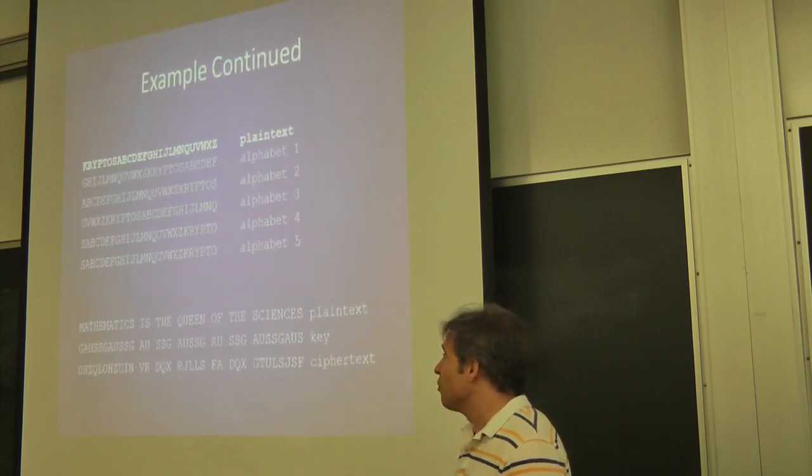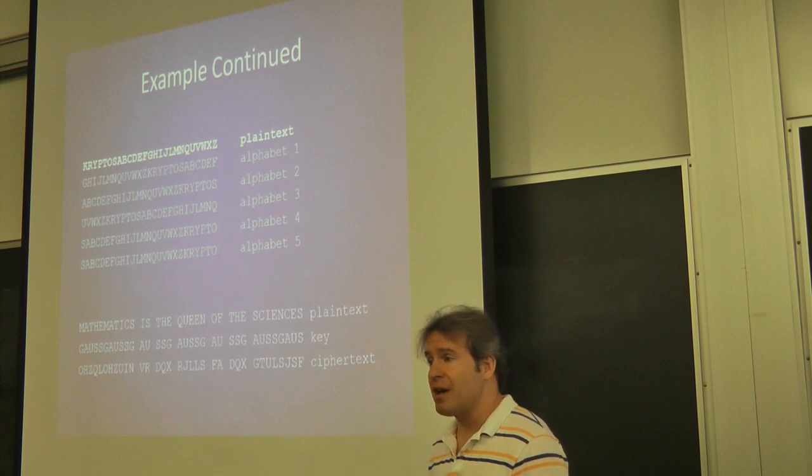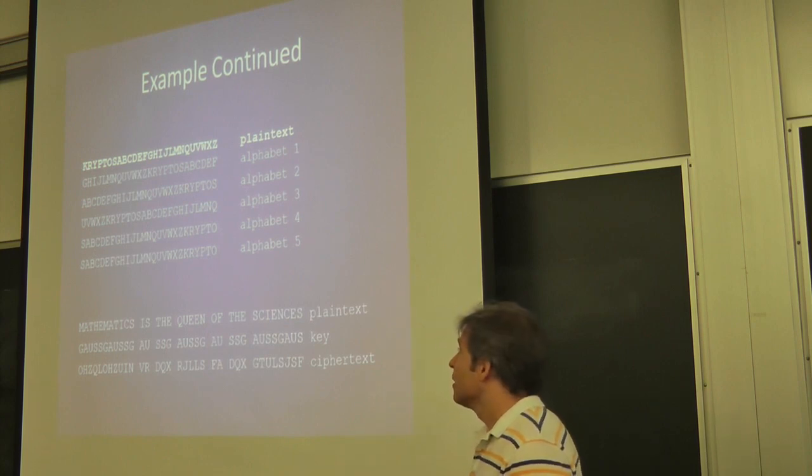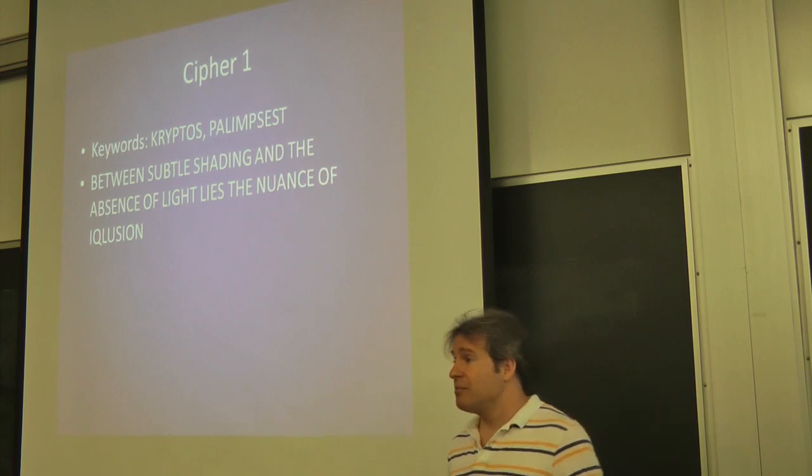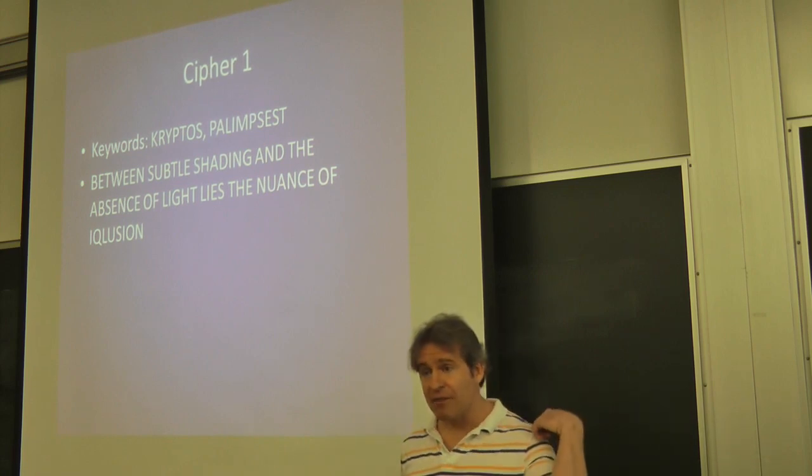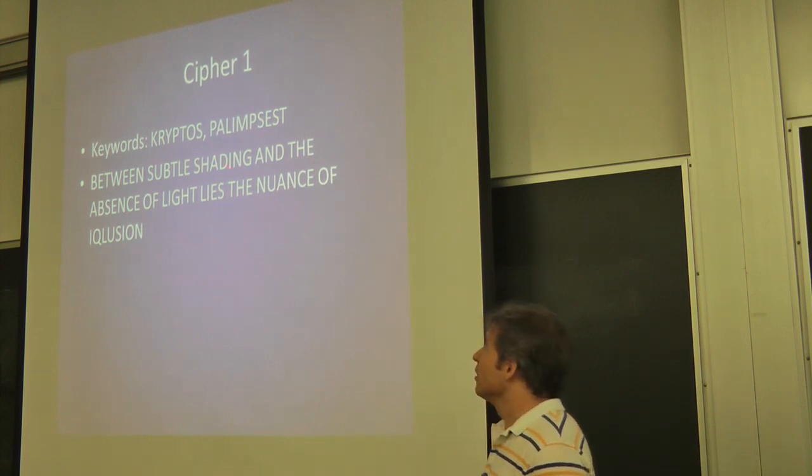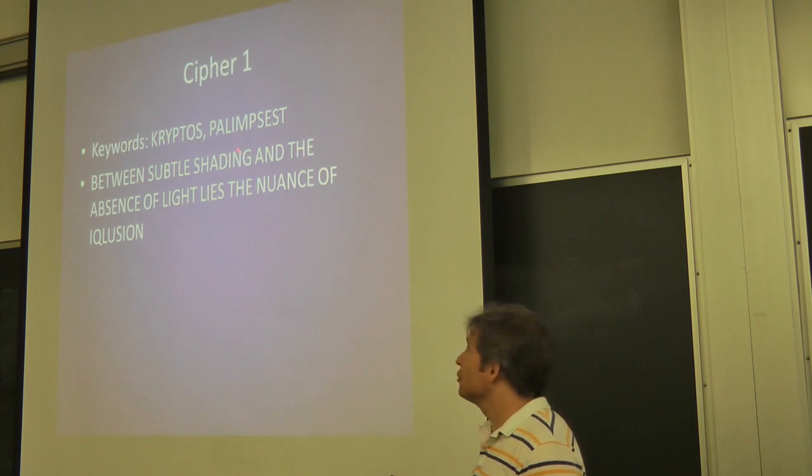So I have a little example here. And again, I don't want to take 10 minutes to go over every letter. You have it to take with you. You have the handout. But this is how cryptos was enciphered. So James Gillogly, who broke those IRA ciphers, broke the first three cryptos ciphers. He realized the keyword was palimpsest, where I use gauss. The artist used the word palimpsest.